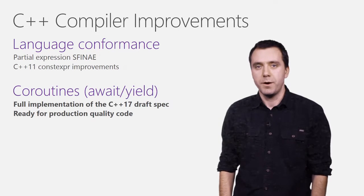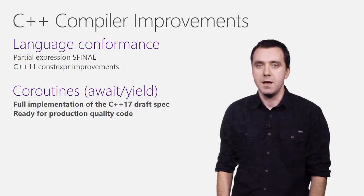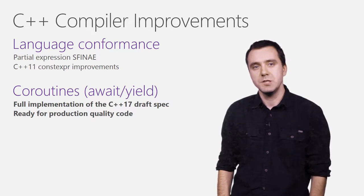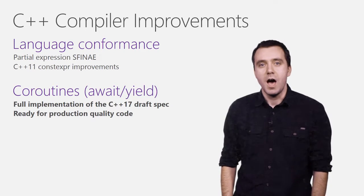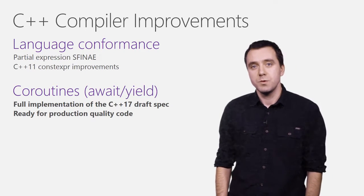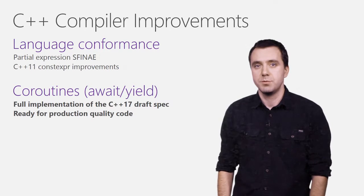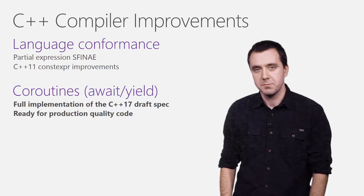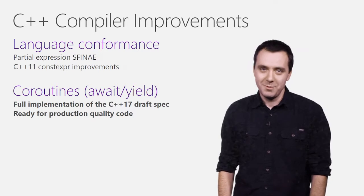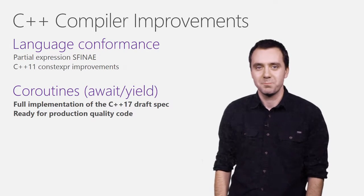Coroutines are part of the C++17 proposal, and a partial implementation was already available in the RTM product. Update 1 comes with a full implementation of the draft C++17 proposal and is now ready to be used in production environments. If not familiar already, now is a good time to learn about await and yield.